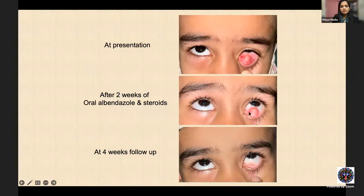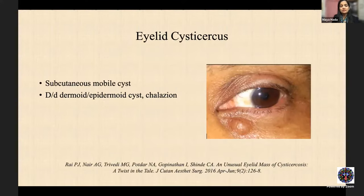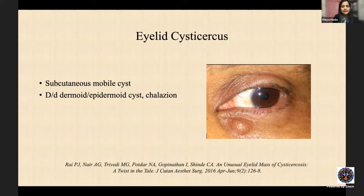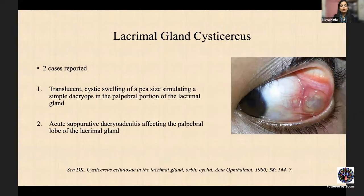The patient was given oral albendazole and steroid. At four-week follow-up, inflammation resolved and the cyst began collapsing. Eyelid cysticercosis is essentially subcutaneous cysticercosis — only a few cases reported, mimicking a chalazion, dermoid, or epidermoid cyst; diagnosis is by histopathology after excision. Lacrimal gland cysticercosis has only two reported cases — one presenting as dacryops and another as dacryoadenitis.